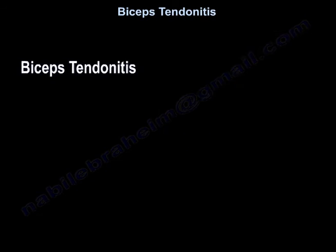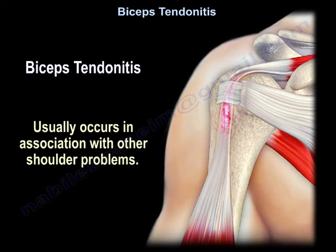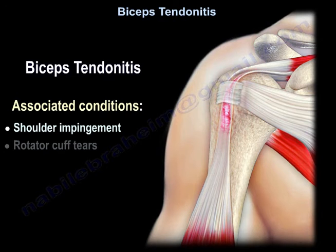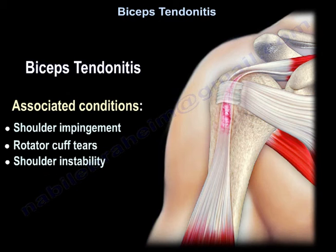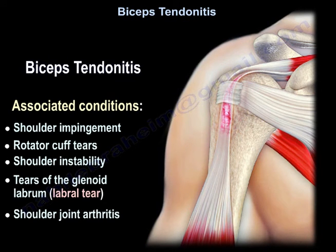Biceps tendinitis usually occurs in association with other shoulder problems such as shoulder impingement, rotator cuff tears, shoulder instability, tears of the glenoid labrum, and shoulder joint arthritis.